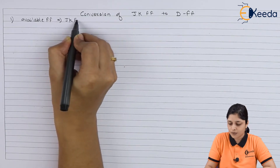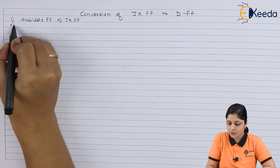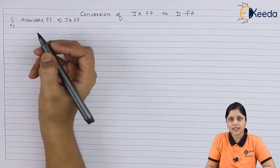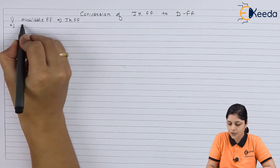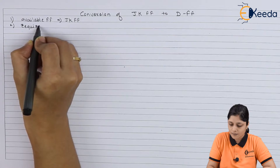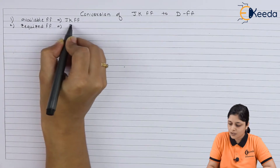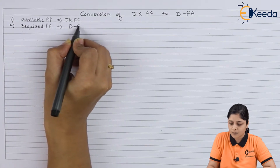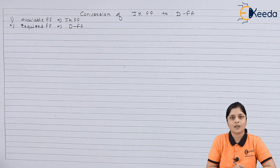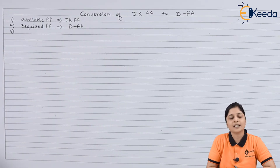After that, the next point to identify is the required flip-flop. Here the required flip-flop is the D flip-flop. After that, you have to focus on the characteristic table and excitation table.